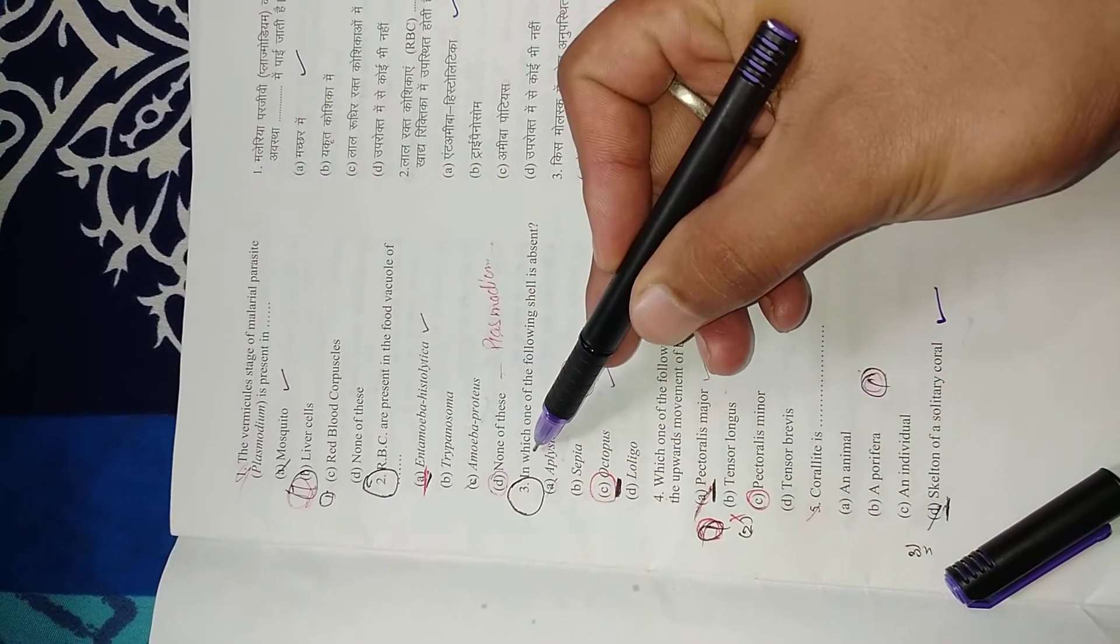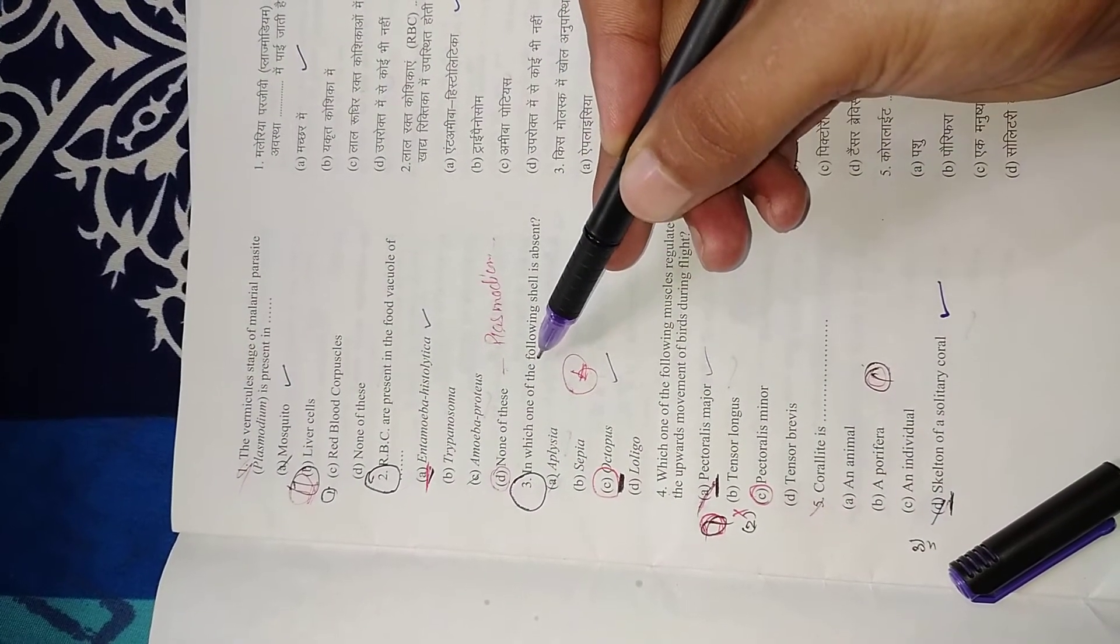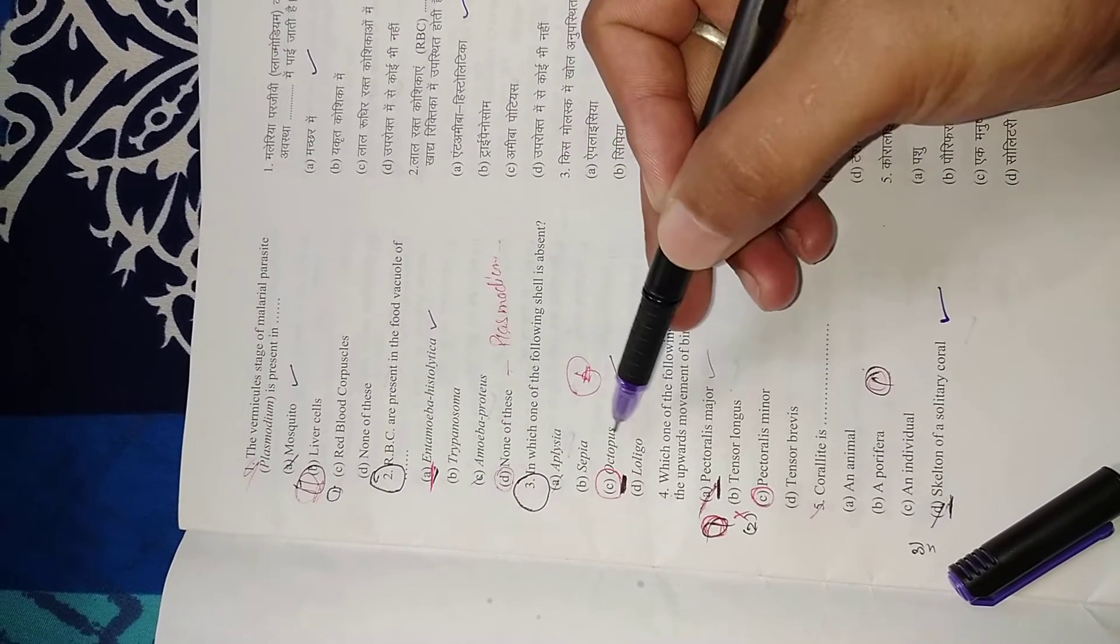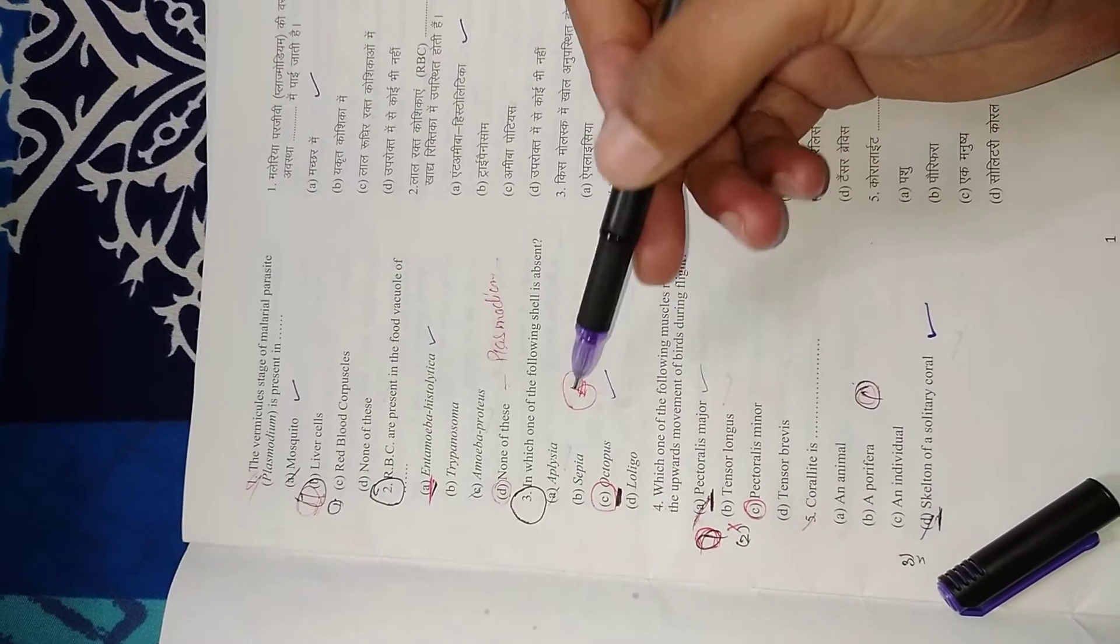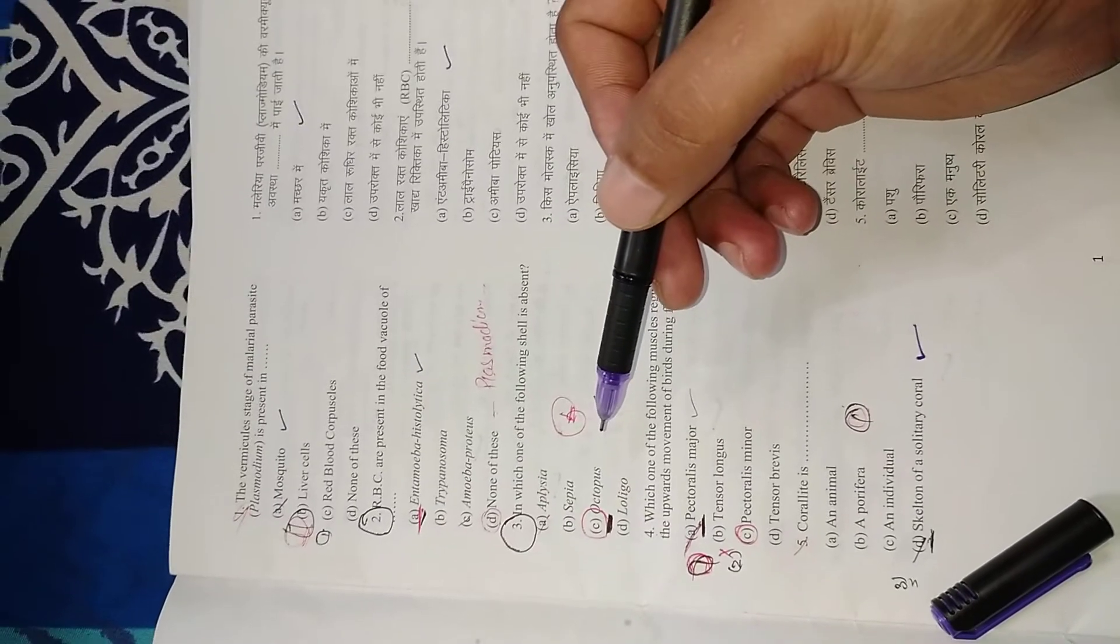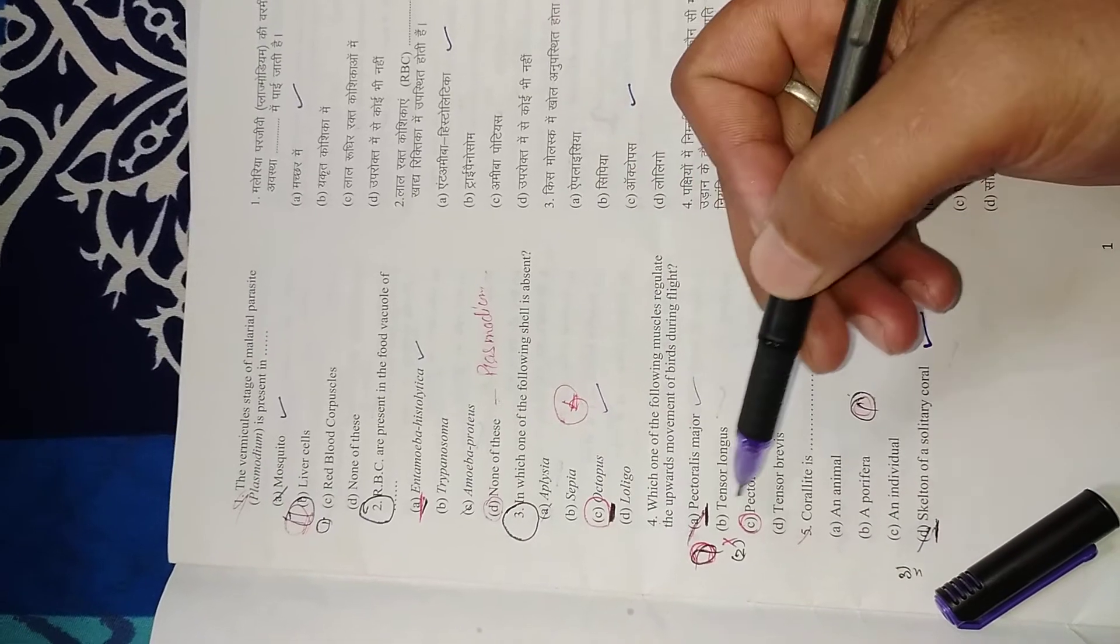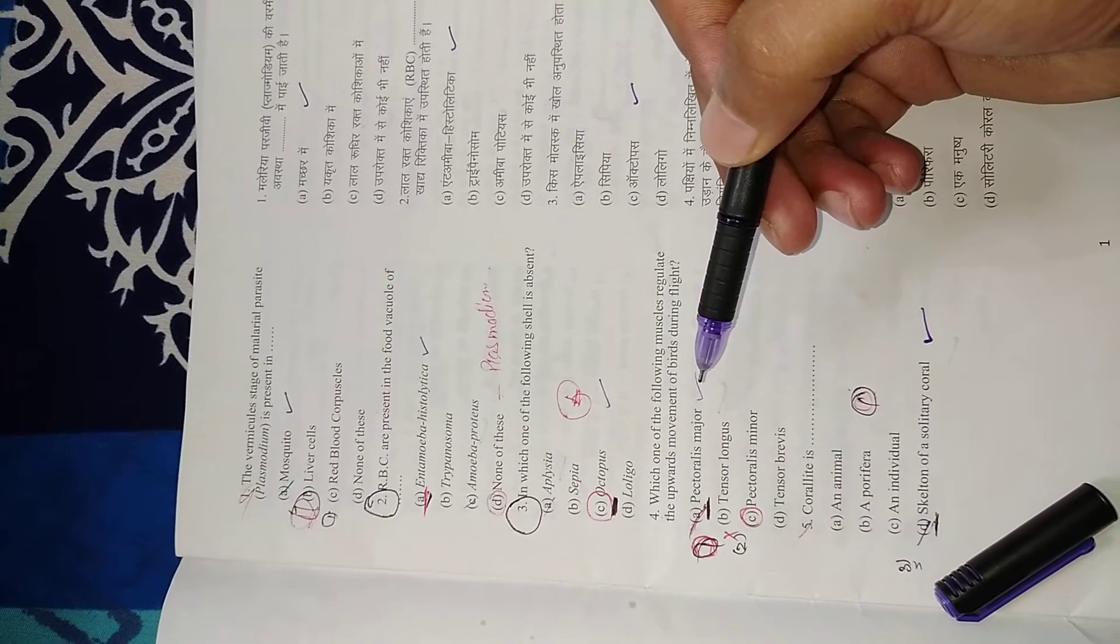Question 3: In which one of the following is shell absent? Right option is C, octopus. As you know, these all belong to phylum Mollusca, and octopus is the only one which doesn't have a shell.